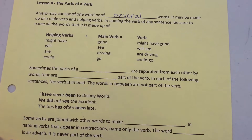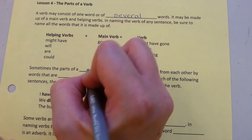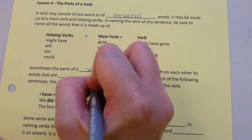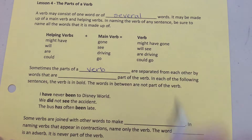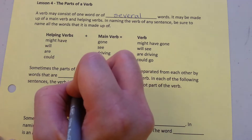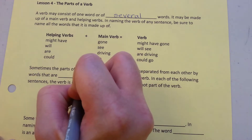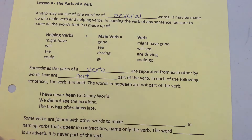Sometimes the parts of a verb are separated from each other by words that are not part of the verb. In each of the following sentences, the verb is in bold. The words in between are not part of the verb.